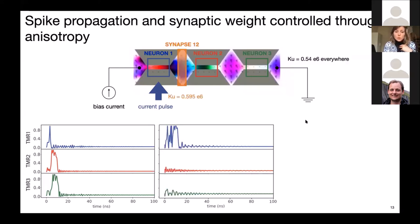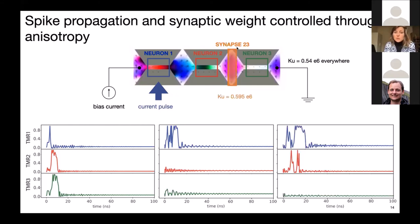Now we can also demonstrate the synaptic functionality, where we locally modify the anisotropy in this island by, for example, applying a DC voltage just there. And then what happens is that we break the magnetization dynamics in this island such that only the first neuron keeps spiking, and the spikes do not propagate down the chain. Or alternatively, we can also modify the weight in the synapse between the second and third neuron, and then only the first two neurons spike and the third one doesn't.